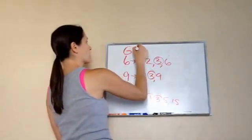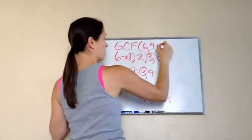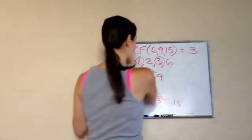So you would say the greatest common factor of 6, 9, and 15 equals 3. Okay. Got it? Yep. That is lesson 20.